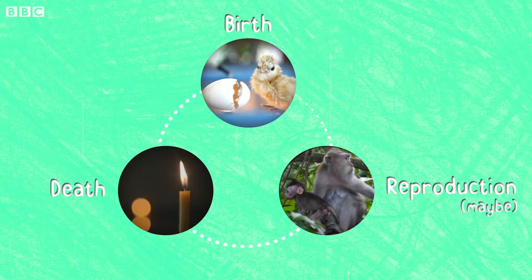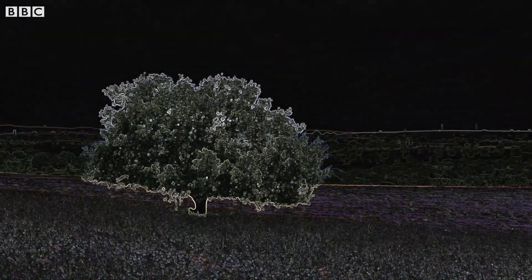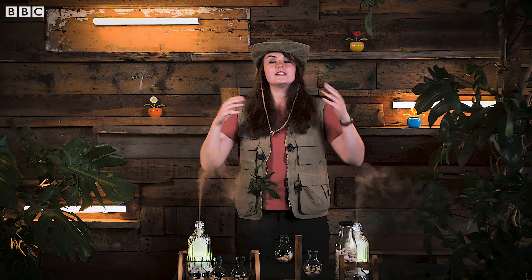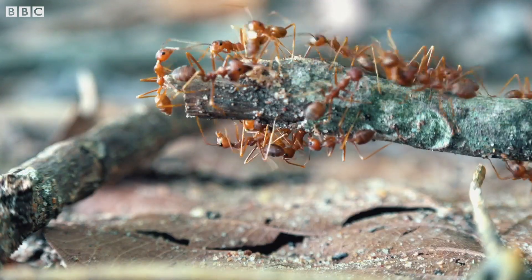All of us — humans, ants, all animals, all plants — we all have a life cycle. We're born, we may reproduce, and then we die. Some of us have more exciting lives than others. Some life cycles are really fast, and some are slow — for example, mayflies live for just 24 hours whereas oak trees can live for up to a thousand years. Different organisms have different ways of reproducing; typically animals like humans need a male and a female, but some creatures like bees, wasps and ants are a bit different.